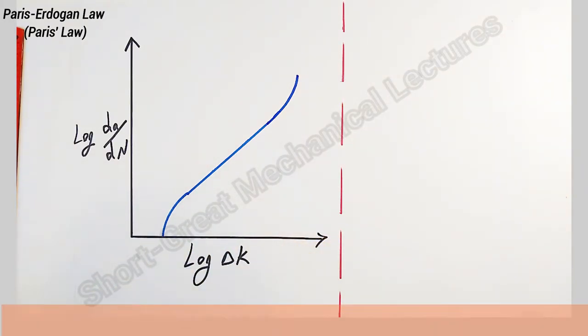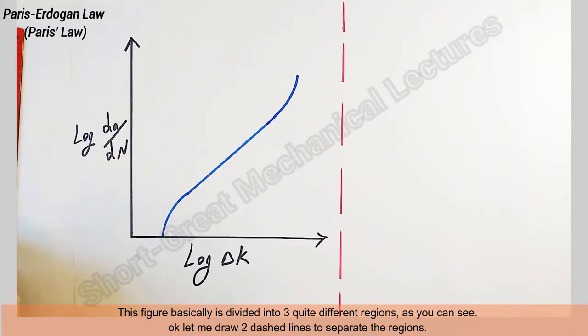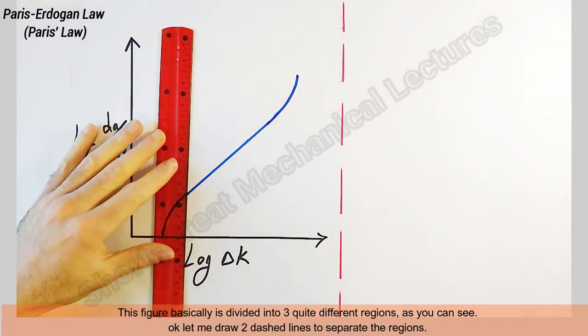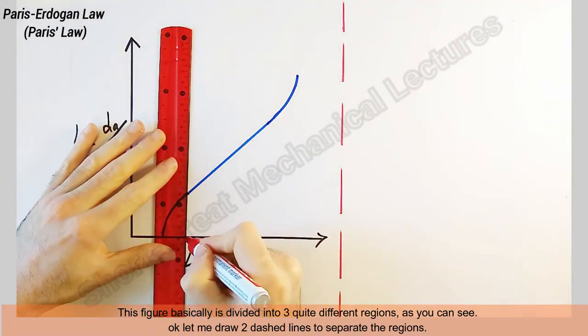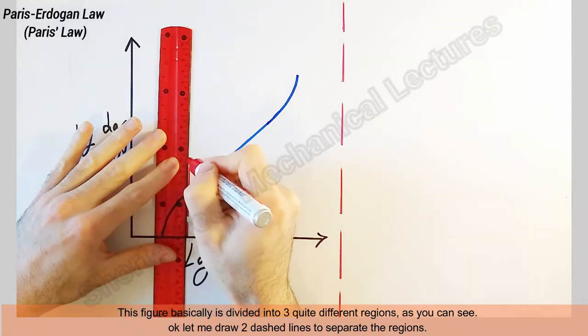And then after the linear part, this part is something like this. This figure is basically divided into three quite different regions. Let me draw two dashed lines to separate the regions.